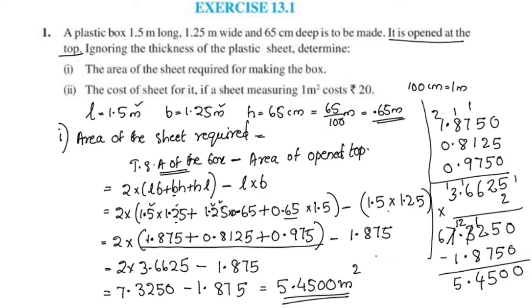The area of the sheet required for making the plastic box is 5.45 square meters.